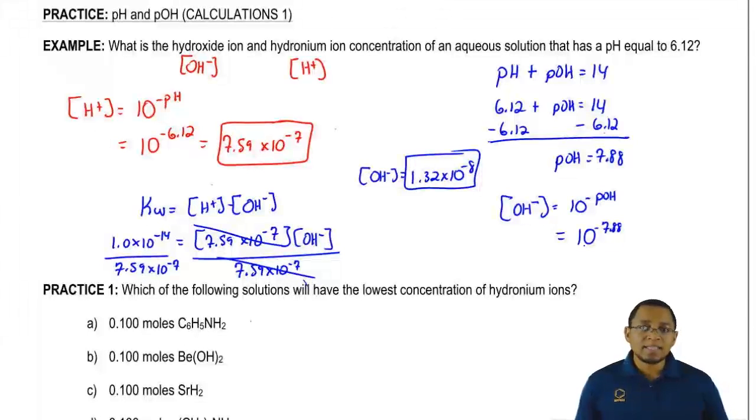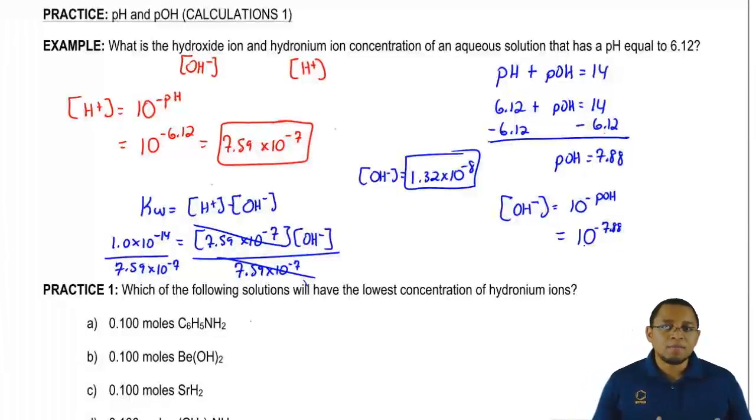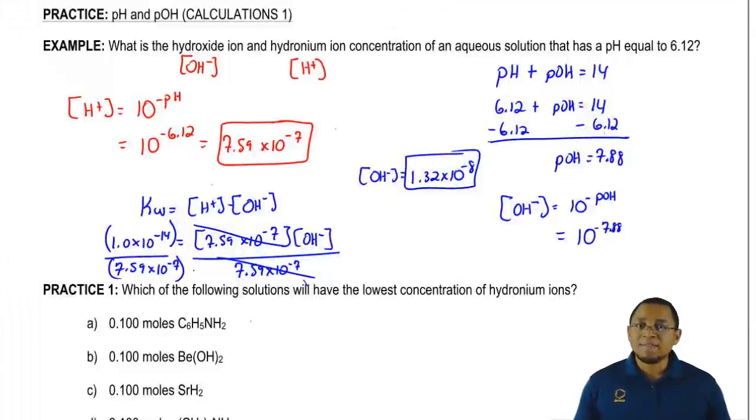So two different methods to find the same exact missing variable. It's basically your choice on deciding which way you want to go. Personally, I like to just find pOH and just do 10 to the negative pOH. Because remember, if you don't put these two in brackets, your calculator may give you the incorrect answer. So it's probably always safer just to say OH minus equals 10 to the negative pOH.